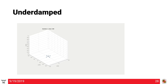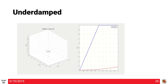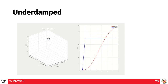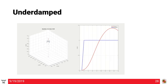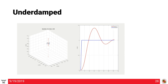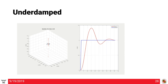Moving on to the underdamped system: if your KP is too low, you will have a huge peak overshoot and you will never want a response like this because the quadrotor will fly very far away from the desired position. Note that the rise time in this case is much lower than all other cases.